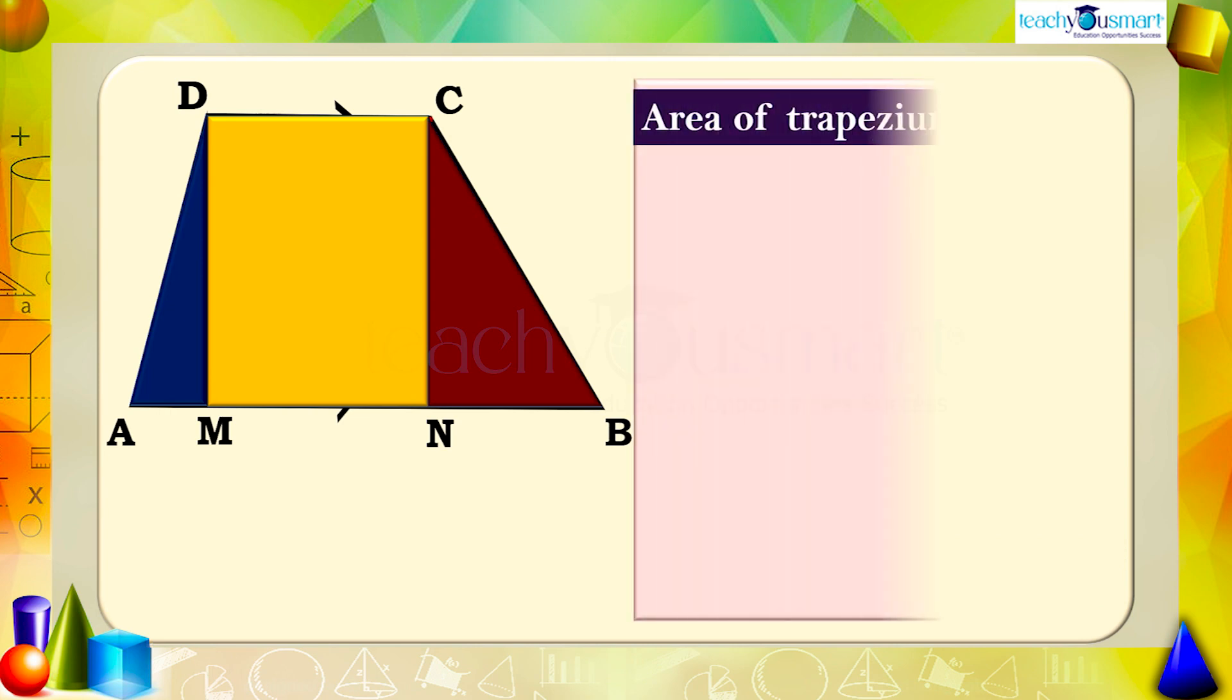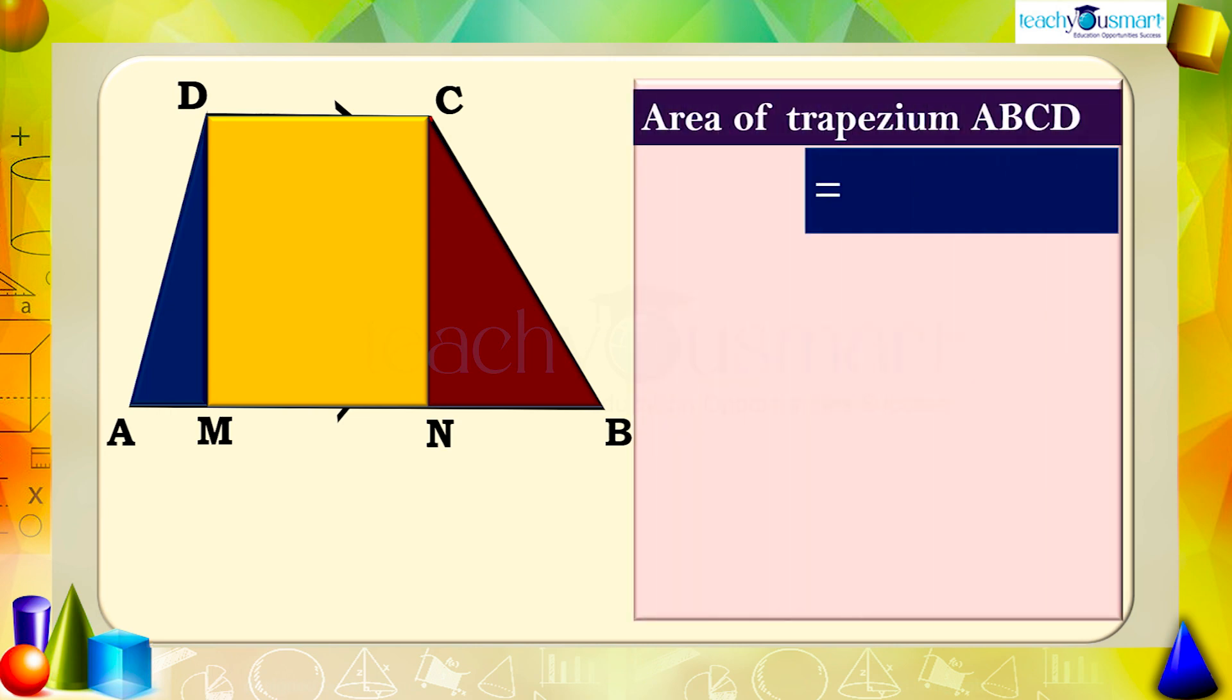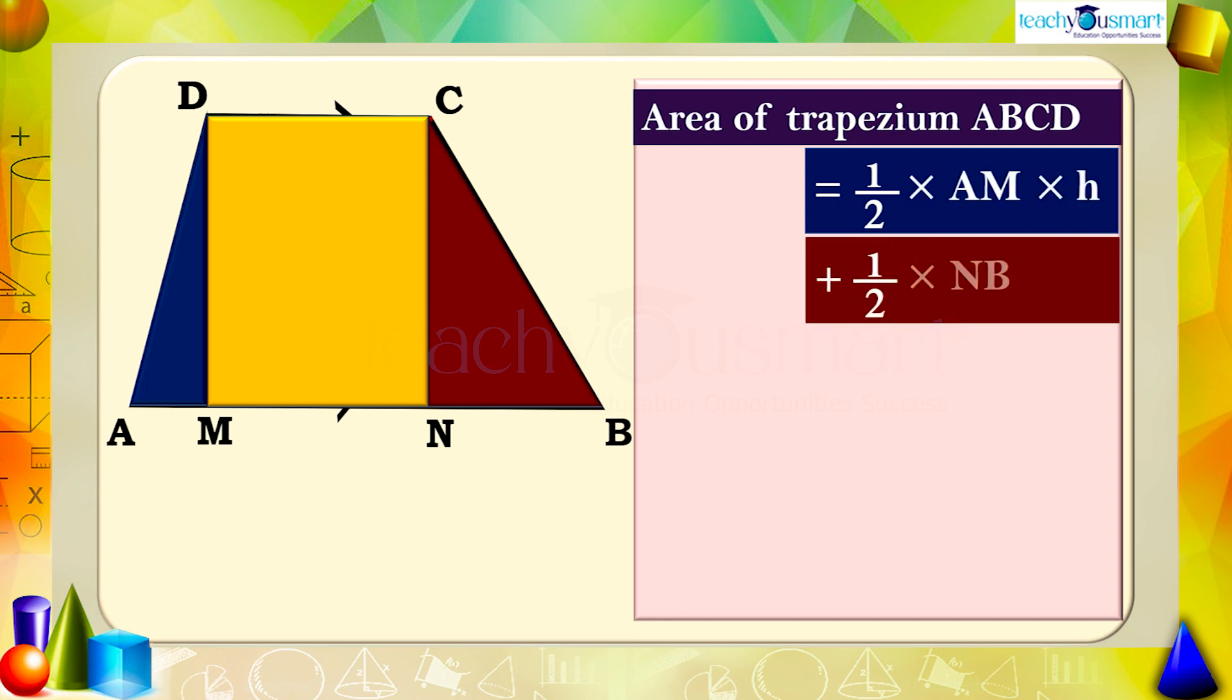Therefore, area of trapezium ABCD equals half multiplied by AM multiplied by h plus half multiplied by NB multiplied by h plus bh.